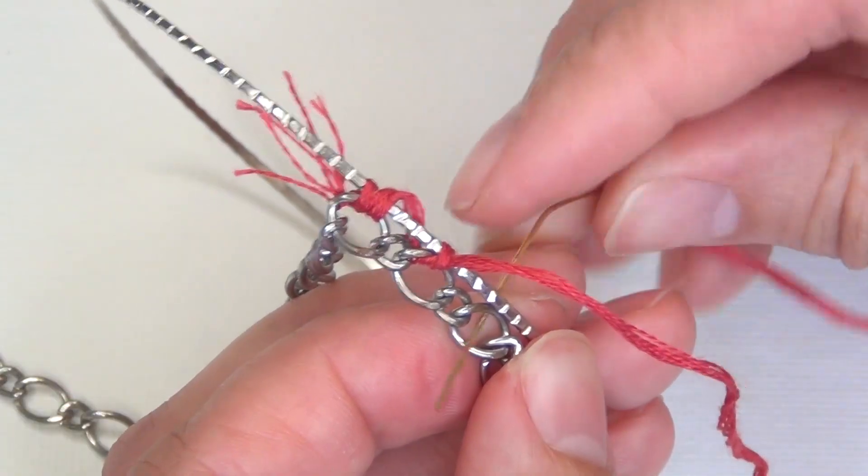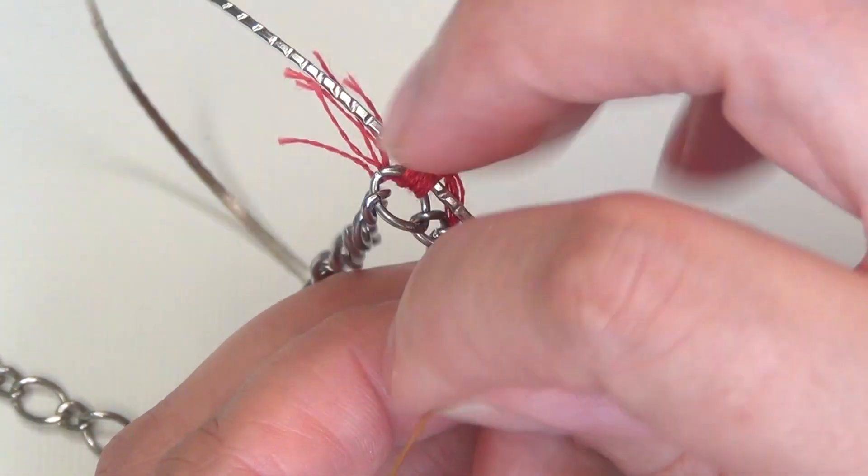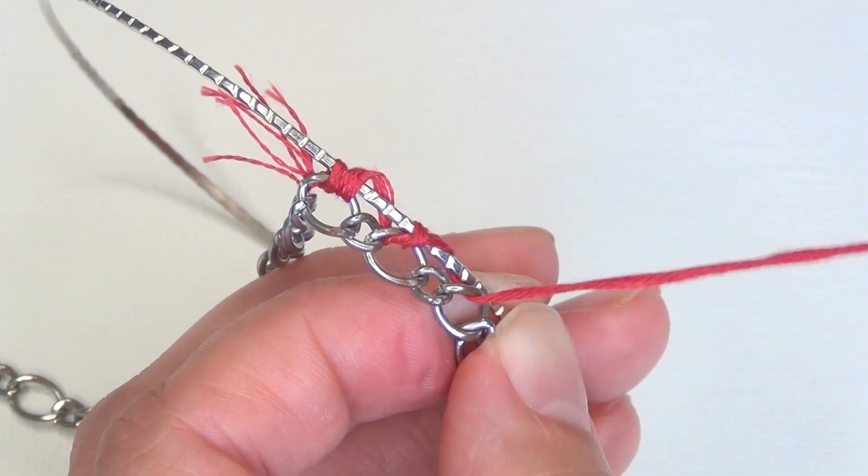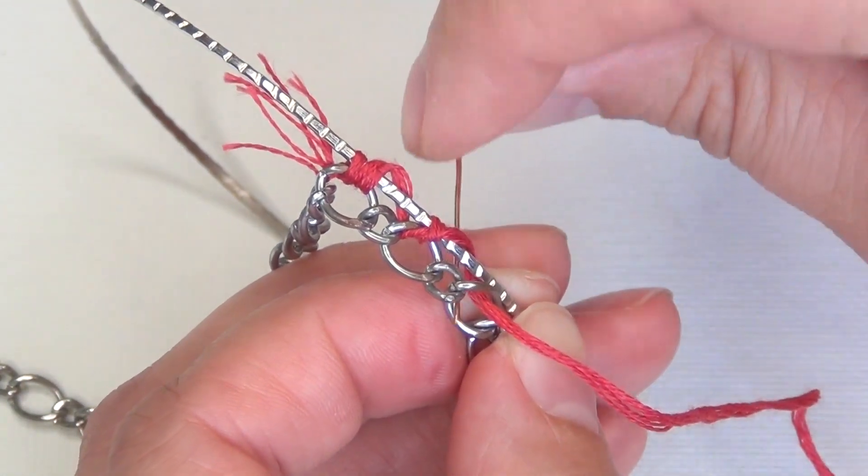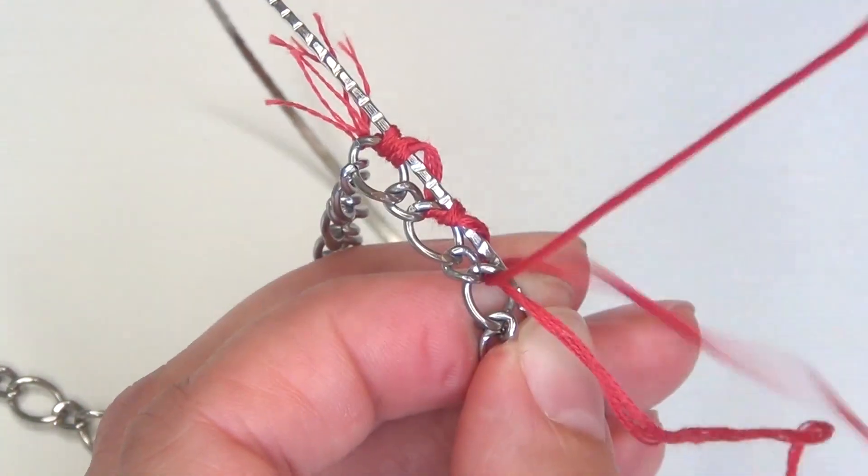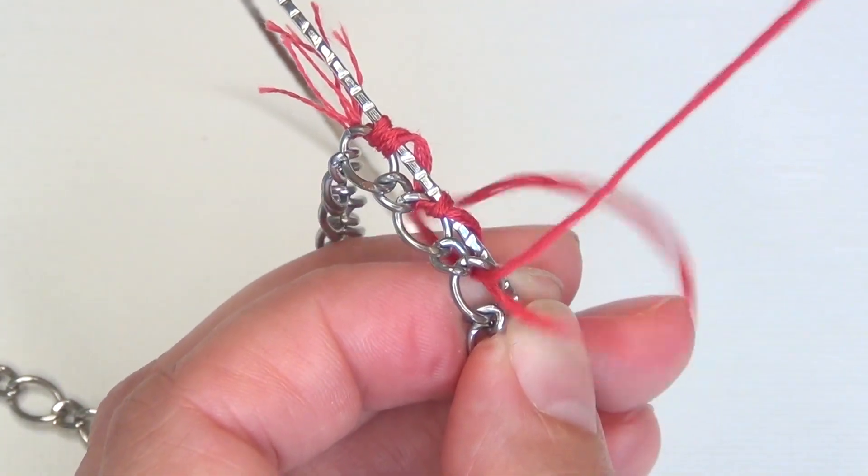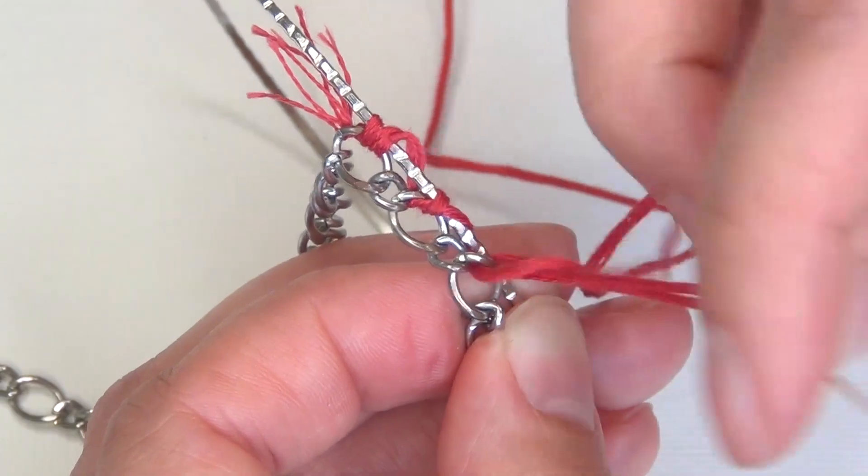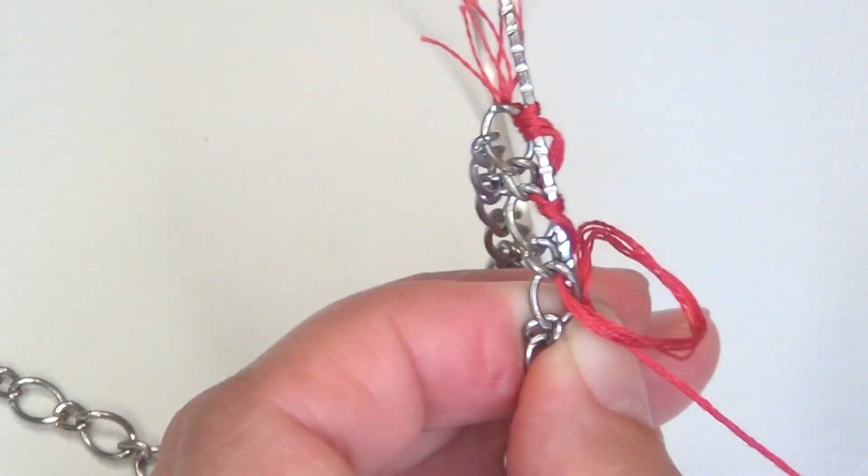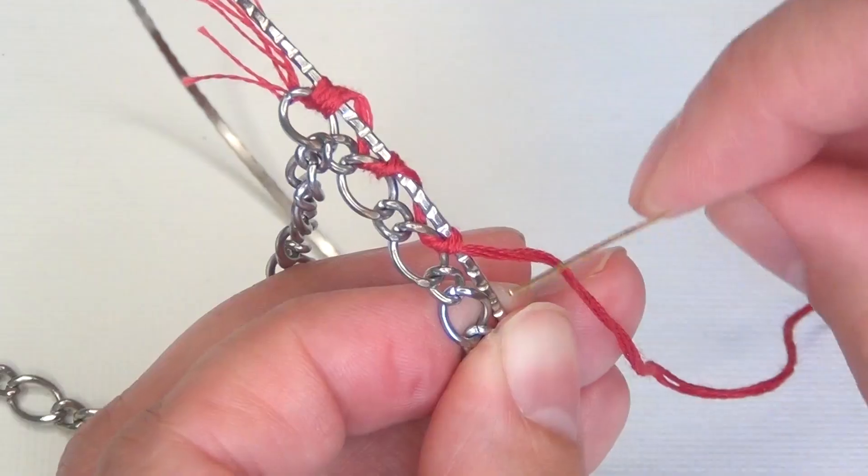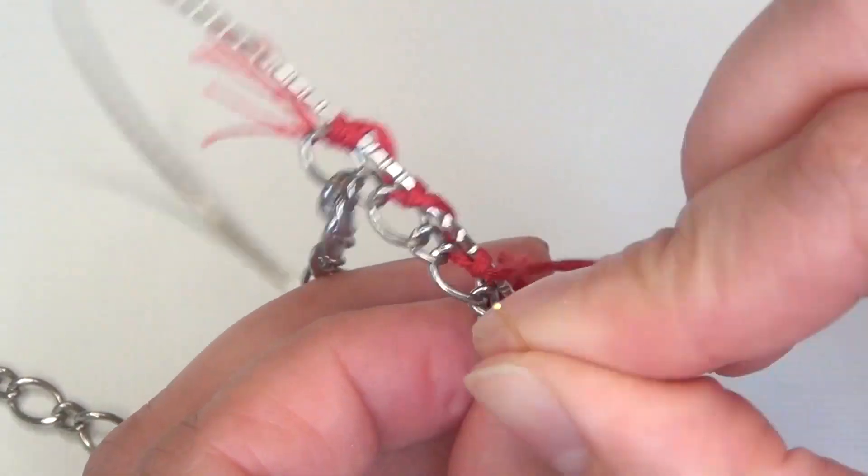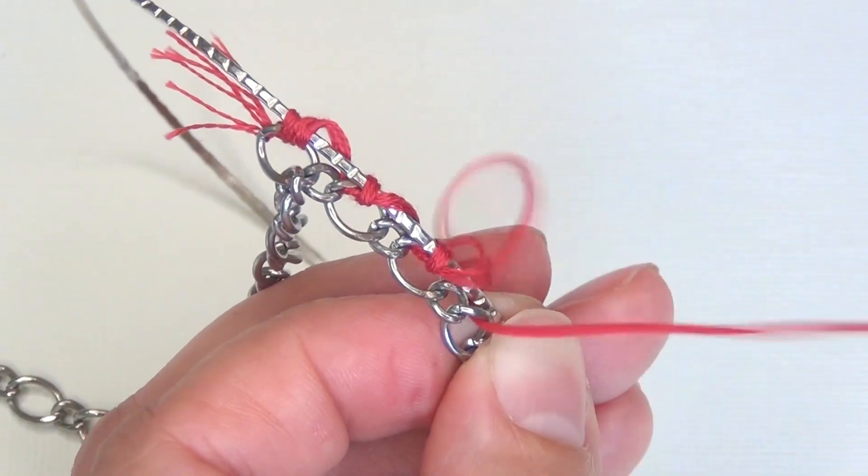Now in this chain I have large links and small links so I'm skipping the smaller ones. But if all of the links in your chain are the same size then you can do consecutive links or you can skip one. I think it makes it look a little bit more interesting to have varying sizes of links in the chain, but again you can use whatever you have lying around.